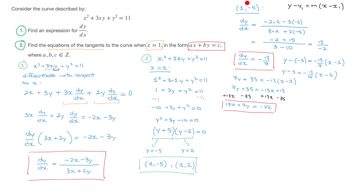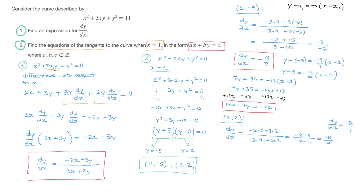At the second point (1, 2), the derivative dy/dx equals (negative 2 times 1 minus 3 times 2) over (3 times 1 plus 2 times 2), which equals negative 2 minus 6 over 3 plus 4, giving negative 8 over 7. So dy/dx equals negative 8 over 7 at the point (1, 2).